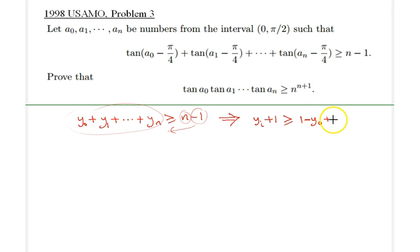That would imply that y sub i plus 1 is greater than or equal to, it's possible to split that n into pieces of 1. So it would be 1 minus y sub 0 plus 1 minus y sub 1 plus all the way to 1 minus y sub i minus 1, then 1 minus y sub i plus 1, plus all the way to 1 minus y sub n.